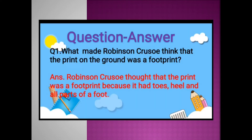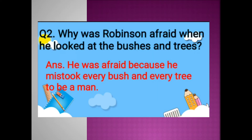See the first one: What made Robinson Crusoe think that the print on the ground was a footprint? Robinson Crusoe thought that the print was a footprint because it had toes, heel, and all parts of a foot, so it merely looks like a human footprint.